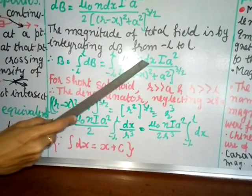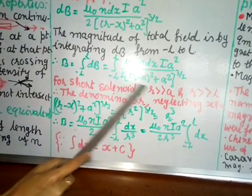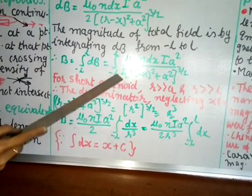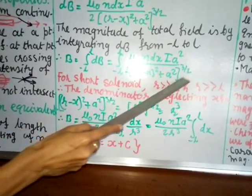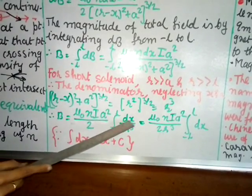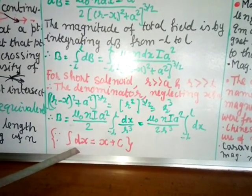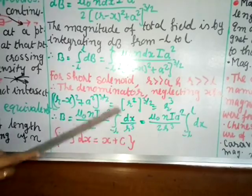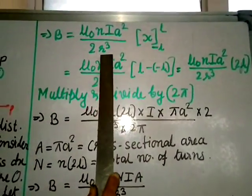So B equals μ₀·n·i·a² / 2, taken common outside the integral, times the integral from −l to +l of dx divided by r³. Since r³ is constant, we take it outside too. The integral of dx is simply x, giving us x evaluated from −l to +l.